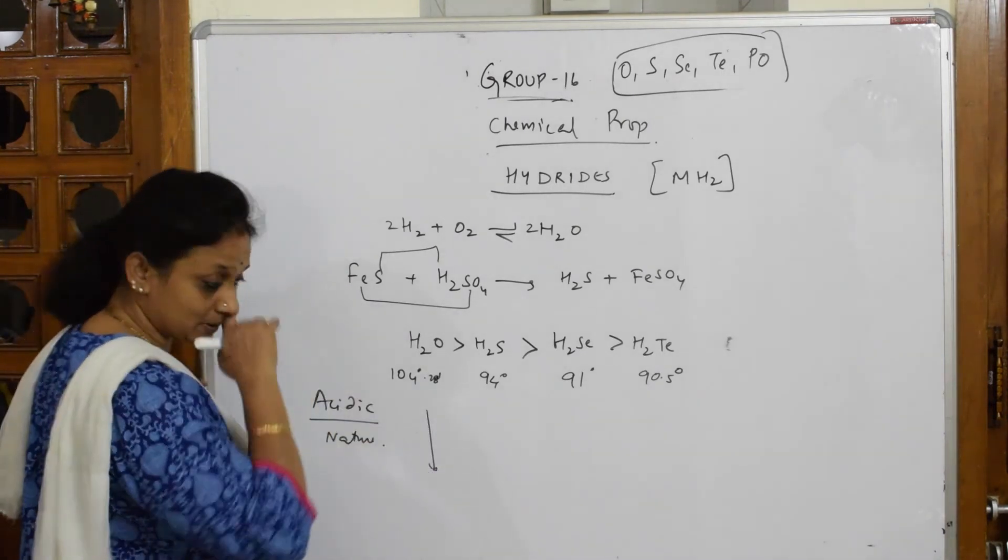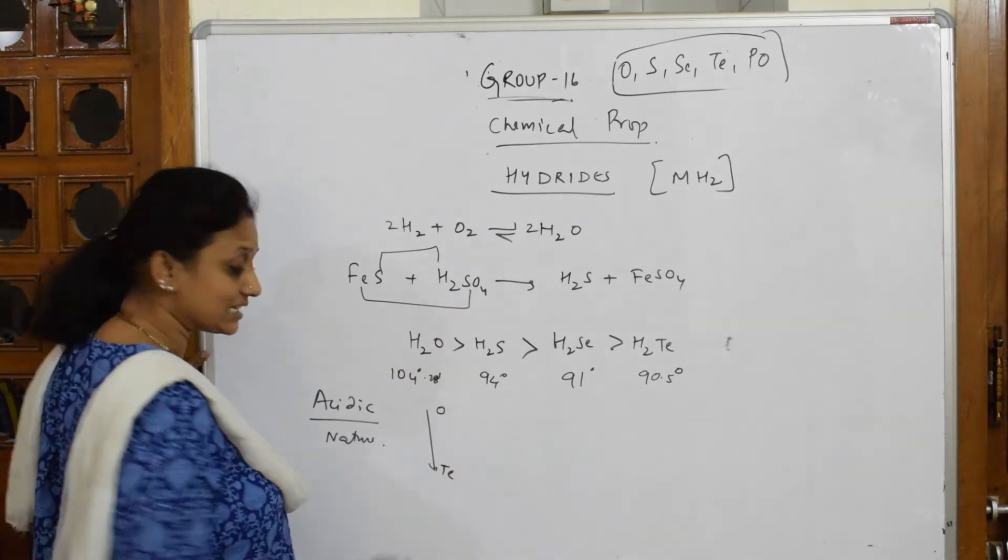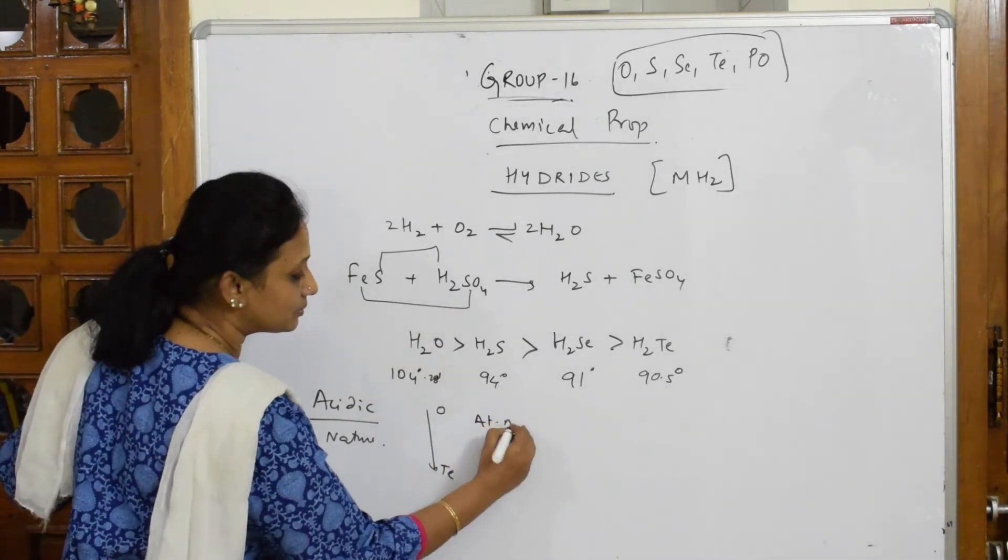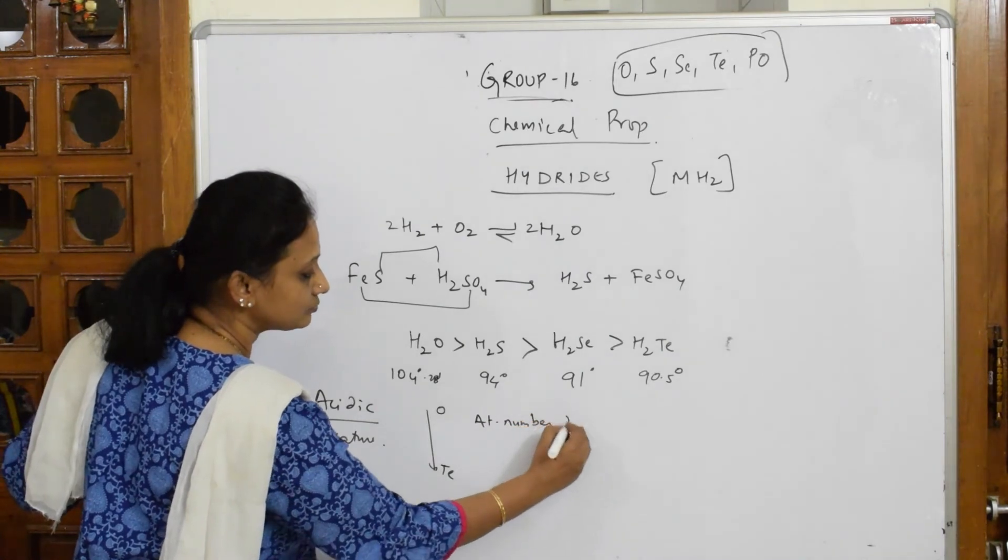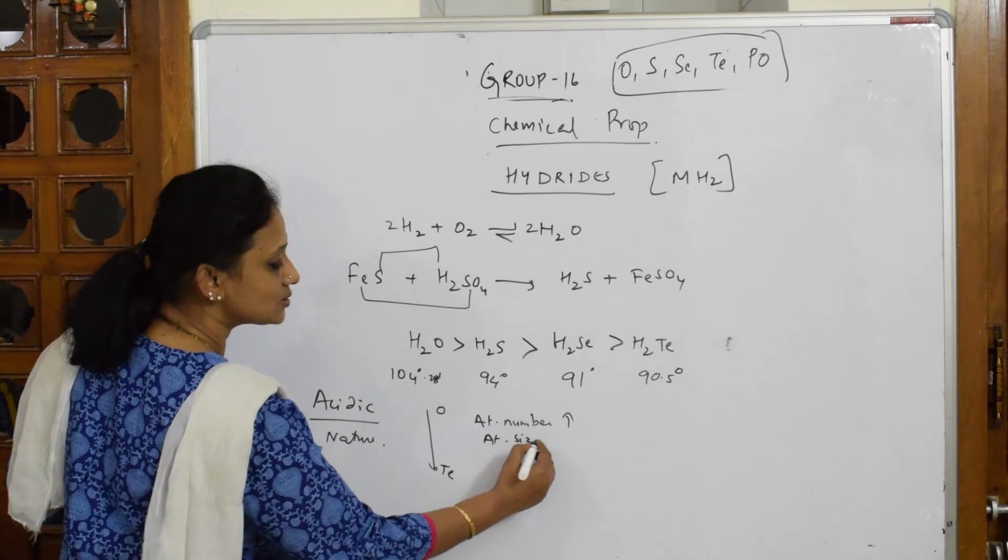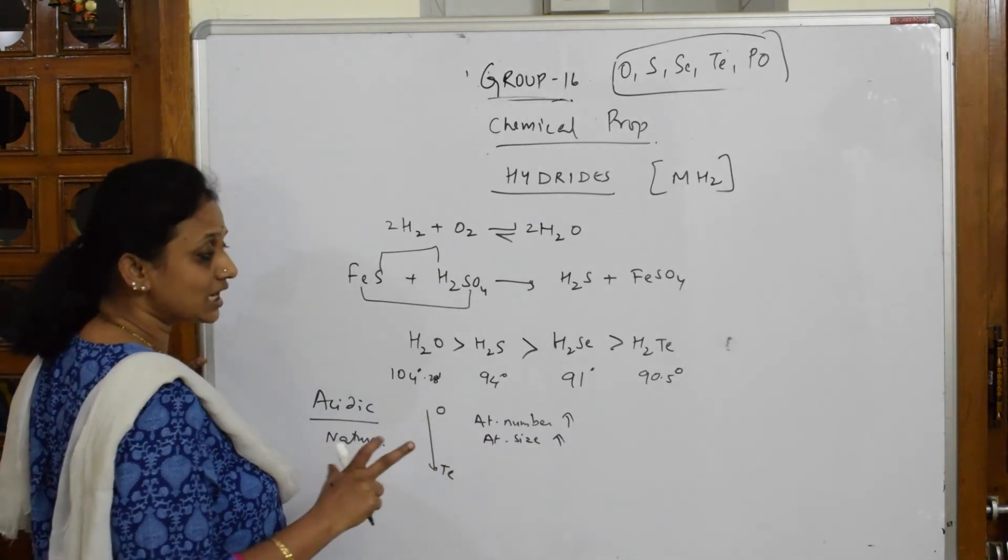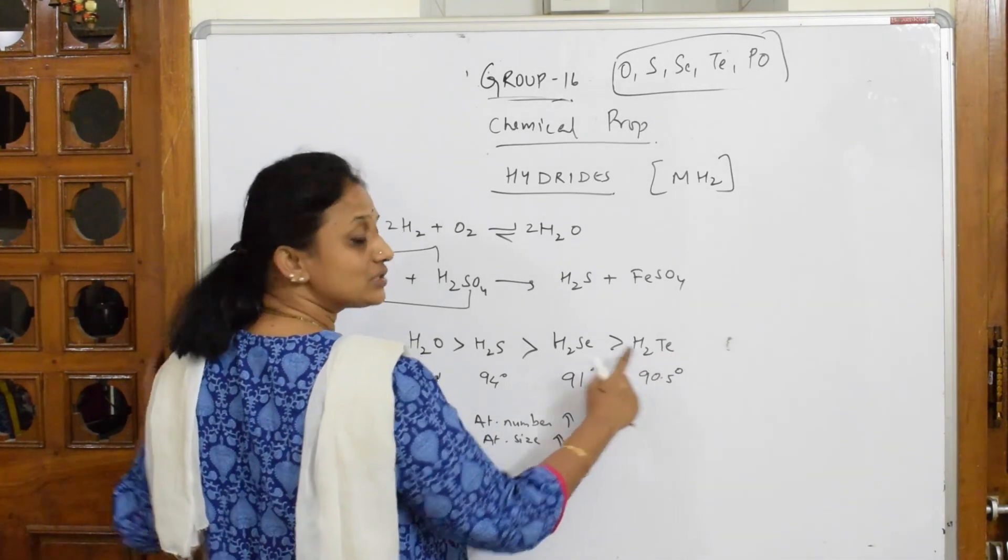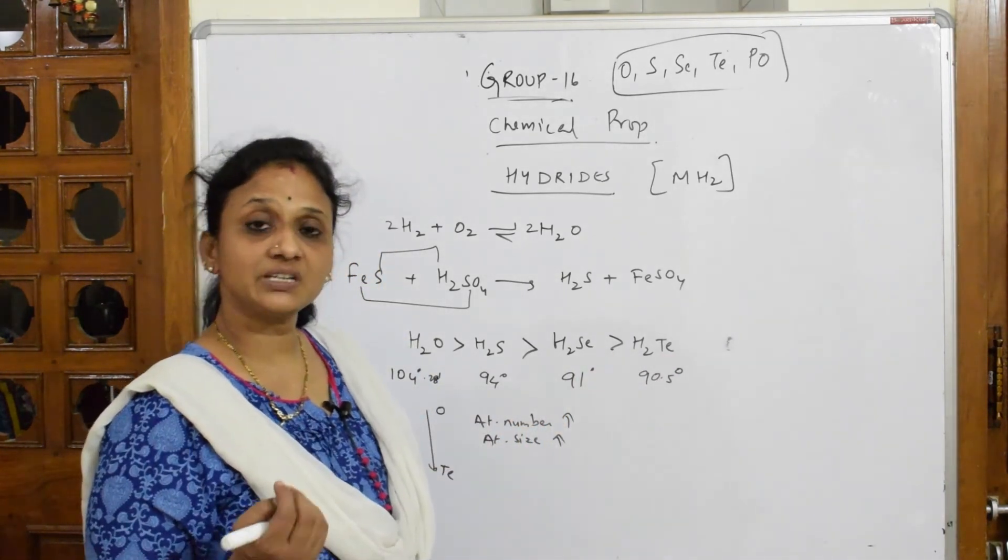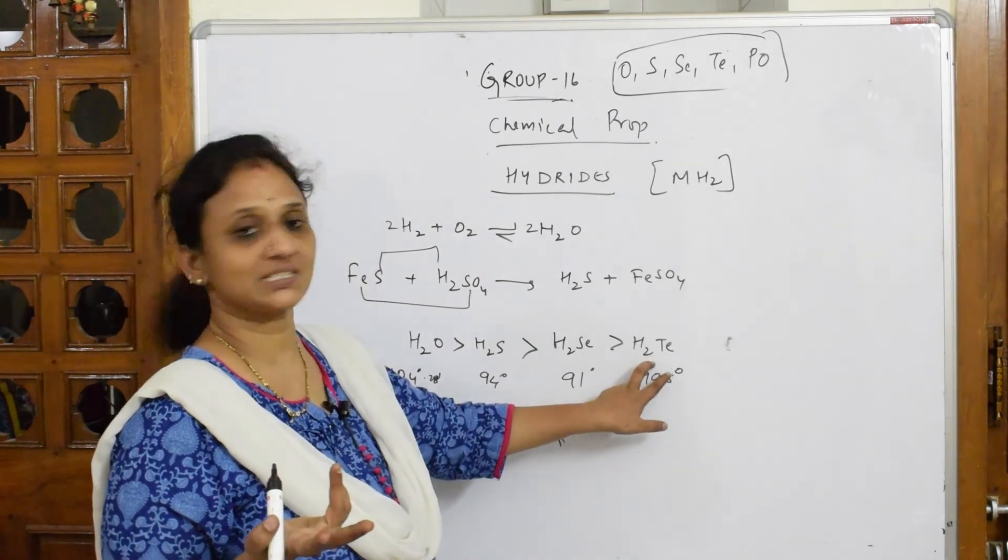As we go down the group, that is from oxygen to tellurium, what is increasing? Atomic number is increasing. When atomic number is increasing, atomic size also increases. When atomic size increases, what will happen? This is the largest size. It is easy to release out H+. When it is really easy to release out H+, which is more acidic? This is more acidic.